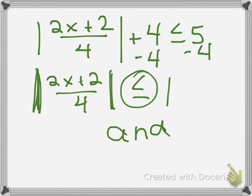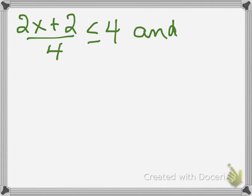I'm going to make a new screen here. When I'm making my two cases, I do the 2x plus 2 over 4 is less than 4, and then I keep all that the same. 2x plus 2 over 4 is greater than or equal to negative 4.